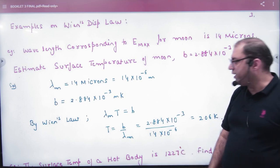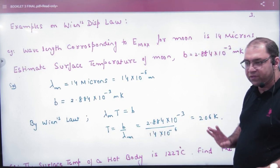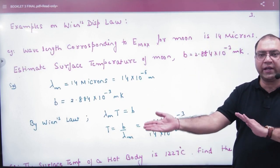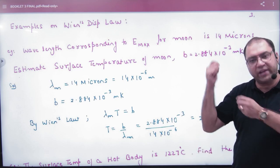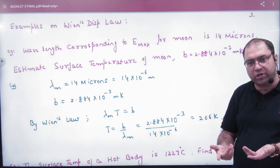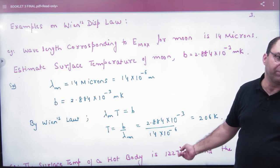So lambda into T is a constant. The temperature can be calculated. When you are giving E and asking temperature, then E is sigma into T to the power 4. When you are giving lambda and asking temperature, then lambda into T is a constant. Like this is the question.